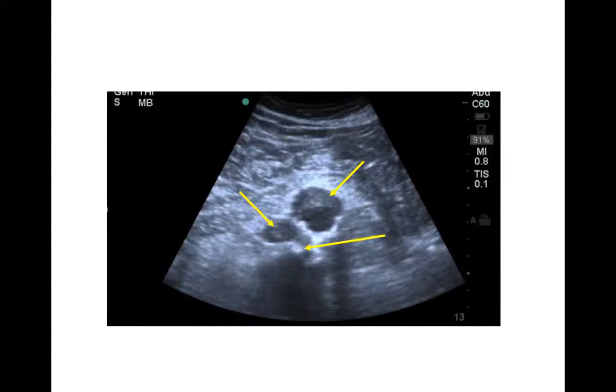You should start ultrasounding in the transverse plane with the marker dot to the patient's right. This picture shows the IVC to the left of your screen and the aorta to the right. The vertebral body shadow sits below these structures.